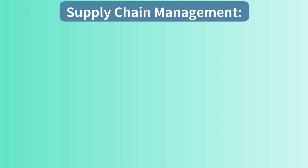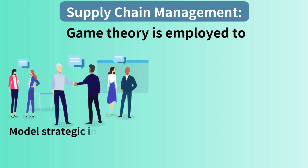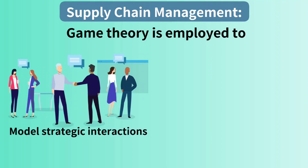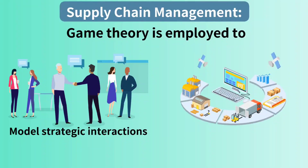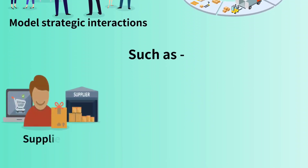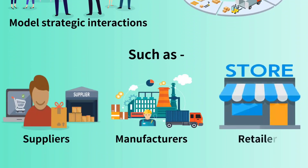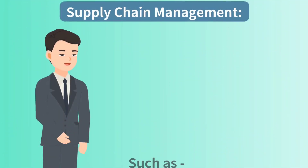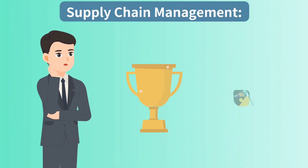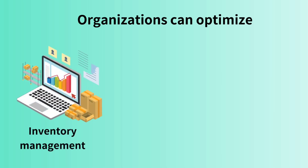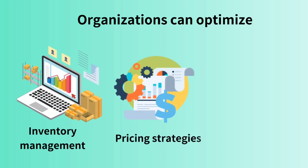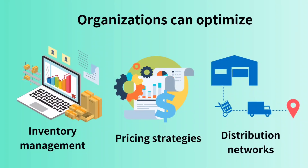Applications of game theory in operations research. Supply chain management: game theory is employed to model strategic interactions among different entities in a supply chain, such as suppliers, manufacturers, and retailers. By understanding the incentives and behaviors of each player, organizations can optimize inventory management, pricing strategies, and distribution networks.